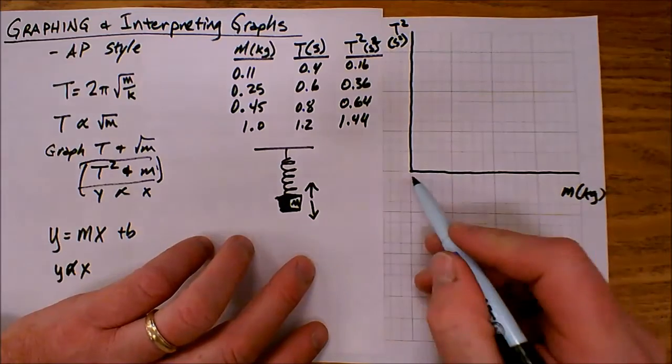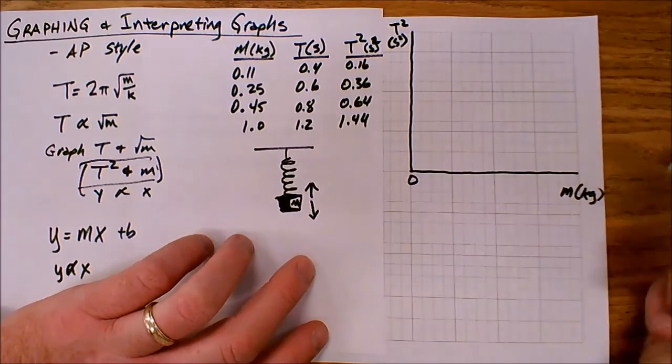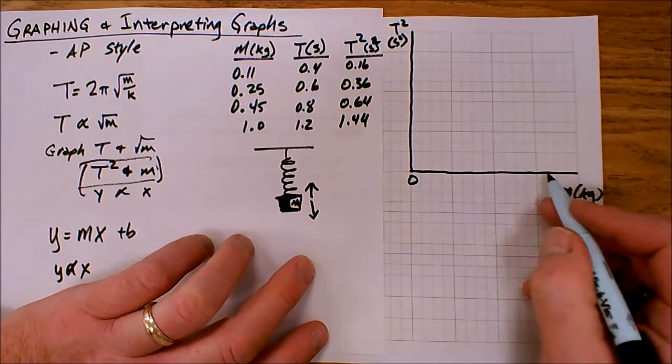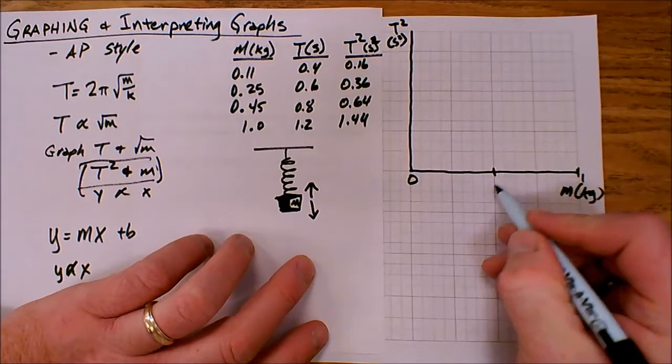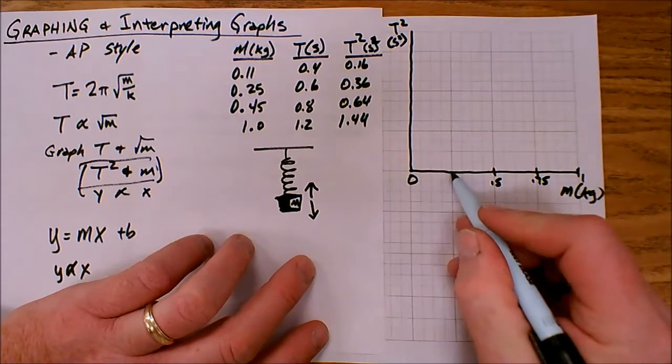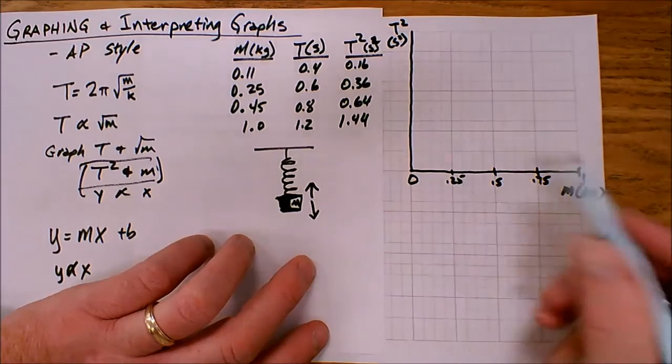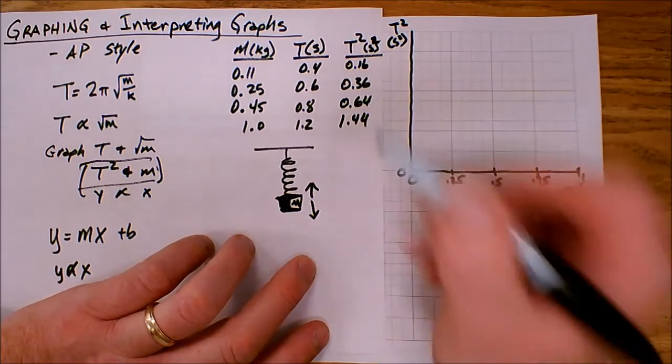So I've drawn axes, I've labeled axes. I need to scale them. So the mass goes from 0 to 1. So let's just, we'll call this 1. That makes this here is 0.5, and this would be 0.75, and this would be 0.25.